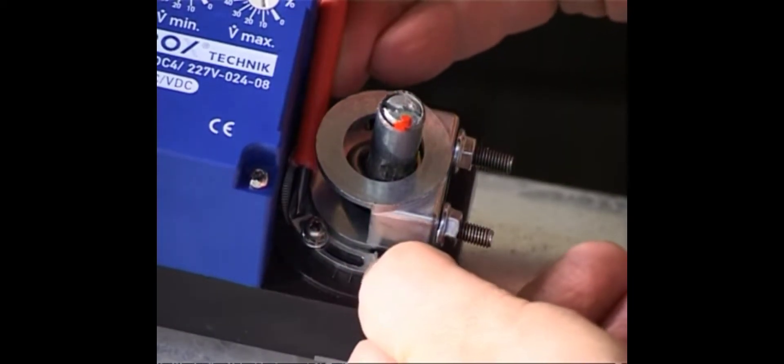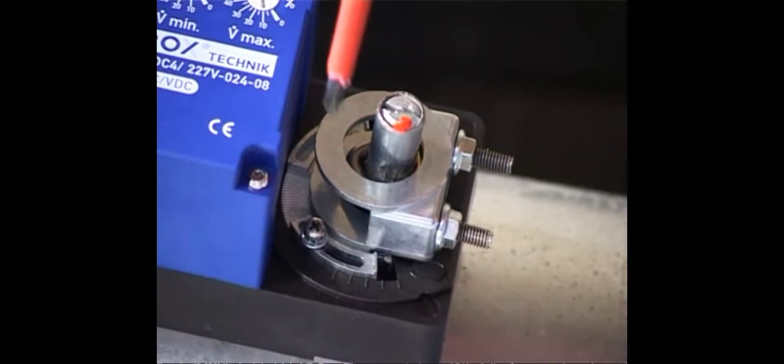In this position, the rotation angle limiter of the Trox compact controller must be locked.